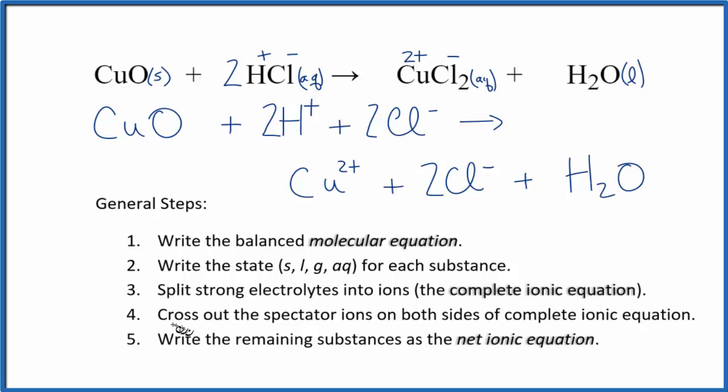What we do next is cross out spectator ions. They're on both sides of that complete ionic equation. So I'm looking for things on both sides, and really all I'm seeing is I have 2 chloride ions here in the reactants, and 2 in the products. So I'm just going to cross those out.